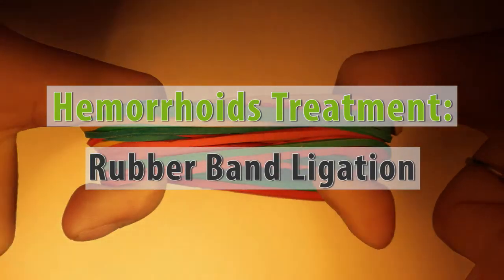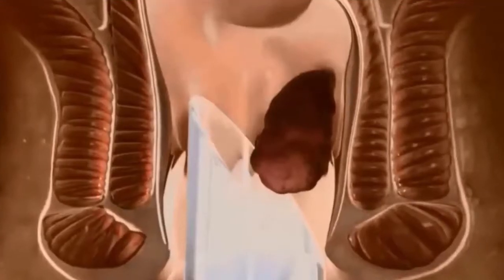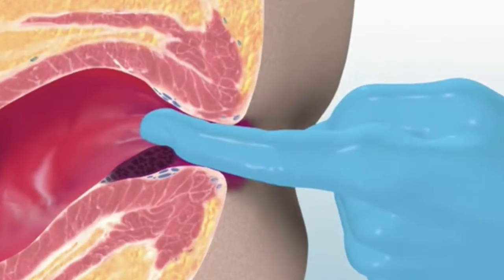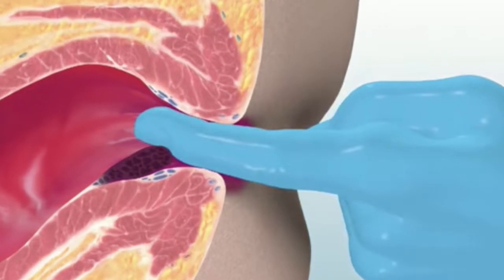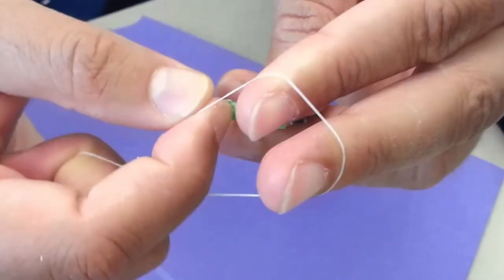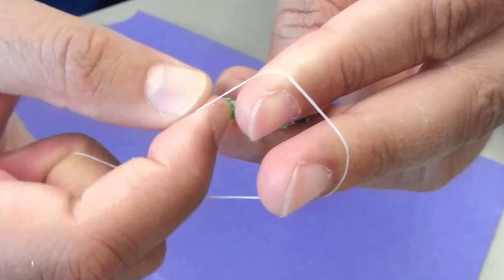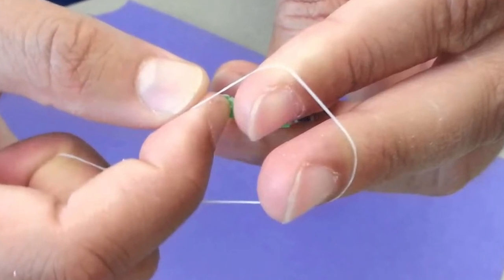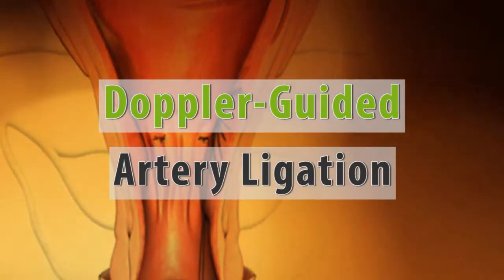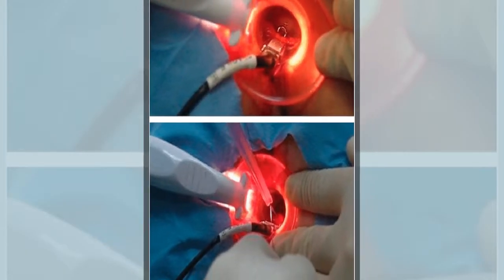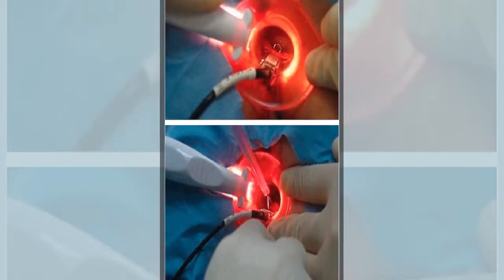Rubber band ligation involves encircling the base of the hemorrhoidal clump with a tight rubber band. The tissue cut off by the rubber band dies and is replaced by an ulcer that heals with scarring. Rubber band ligation can be used with first-, second-, and third-degree hemorrhoids and may be more effective than sclerotherapy.